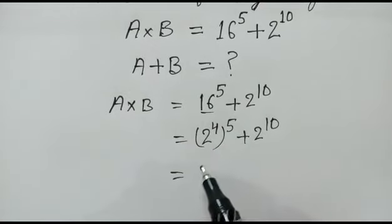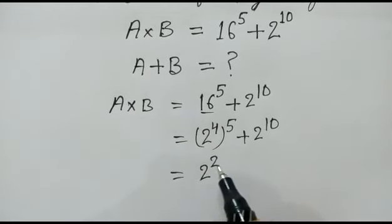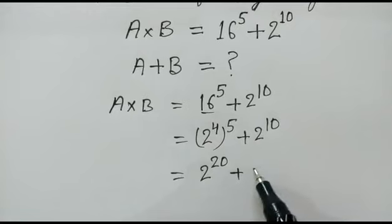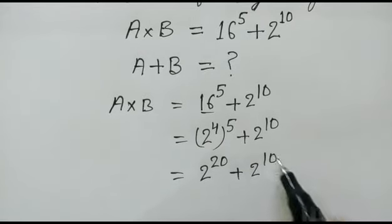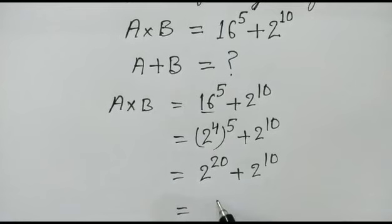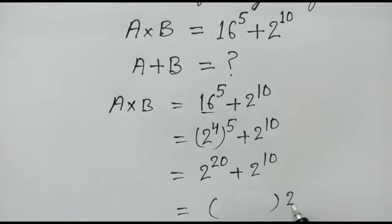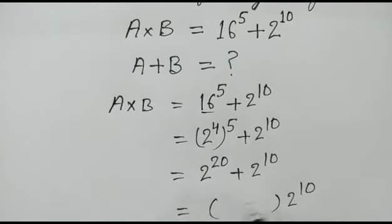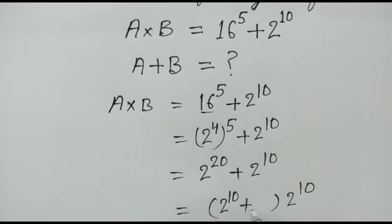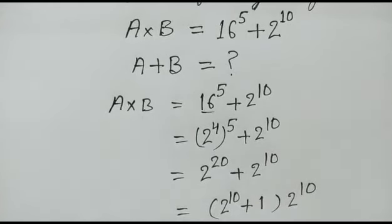Now 2 to the power 20 plus 2 to the power 10. If we take 2 to the power 10 as common, so we have 2 to the power 10 times 2 to the power 10 plus 1.